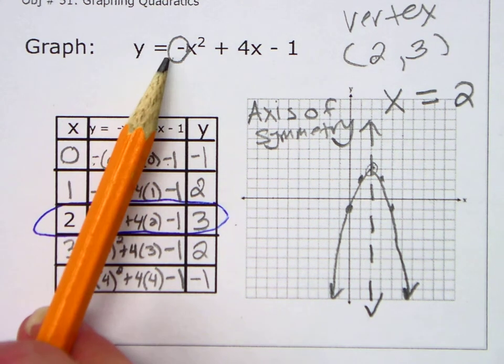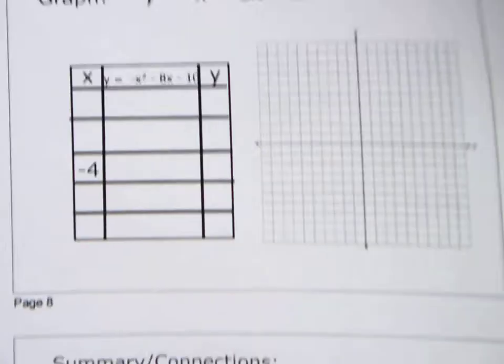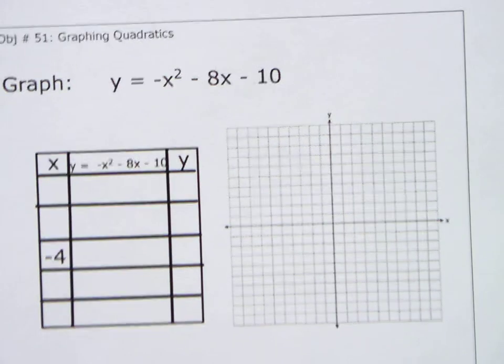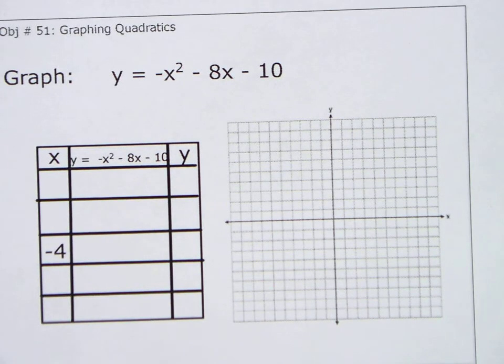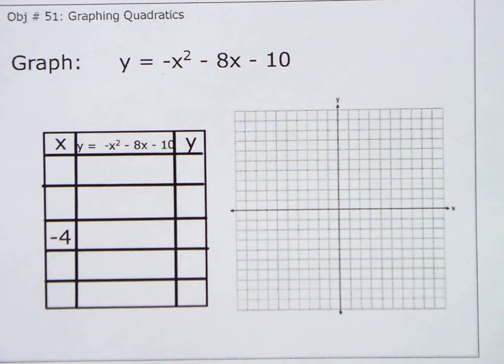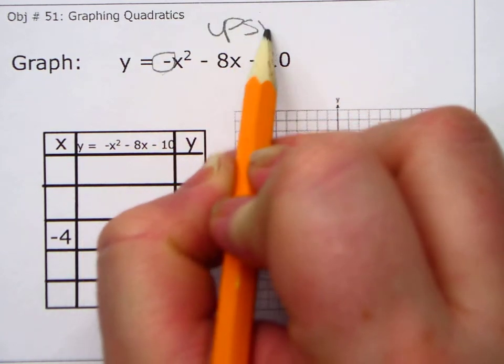So when there's a negative in front of x squared, the parabola is upside down. Let's do one more. Negative x squared minus 8x minus 10. Is this going to be upward facing or downward facing? What do you think? Downward. How do you know? There's a negative in front of x squared. All right. So automatically, because of this, I know my graph is going to be downward.